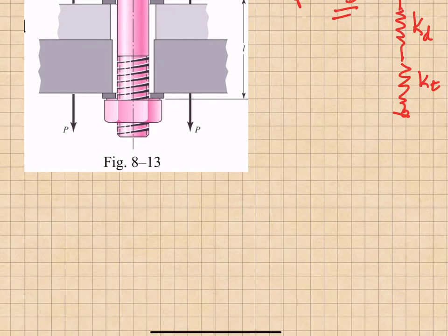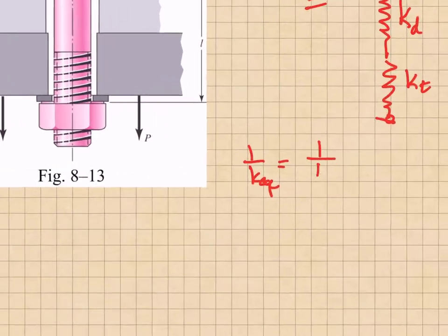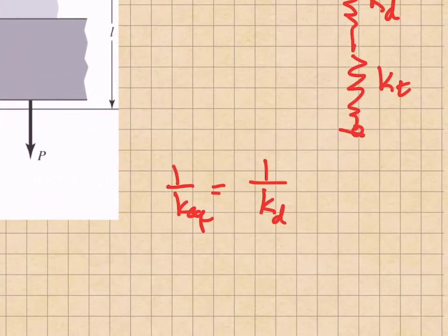From the last lecture, we know that the equivalent spring constant is equal to one over the spring constant of the nominal bolt diameter plus one over the spring constant associated with the threaded section of the bolt.